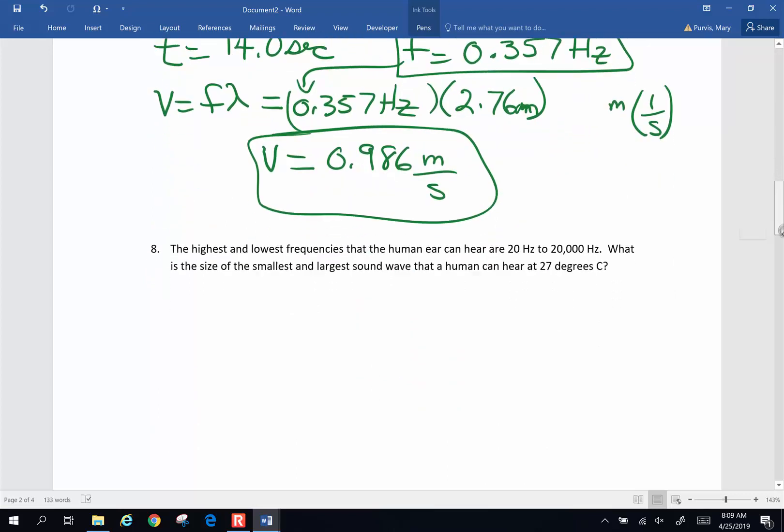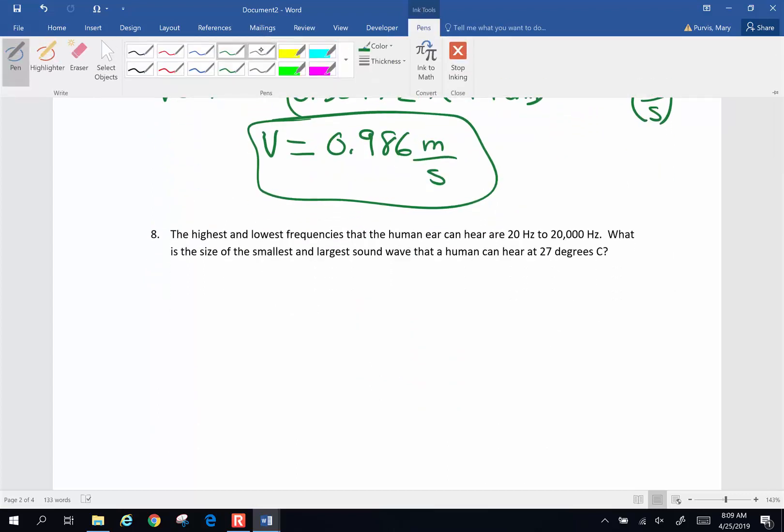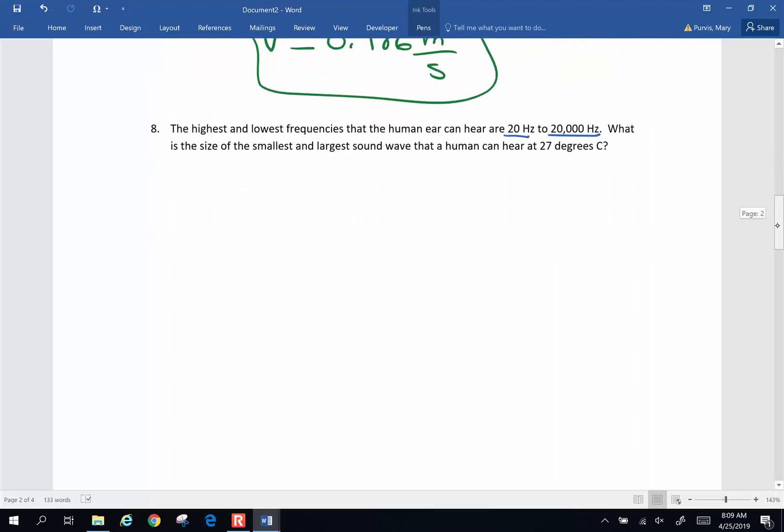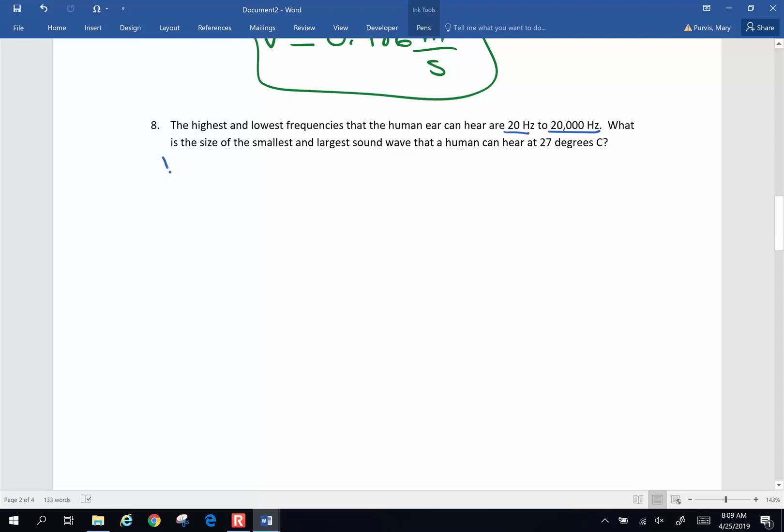Next and last for this group is number eight. And number eight says this. The highest and lowest frequencies that the human ear can hear are 20 to 20,000 hertz. What is the size of the smallest and largest sound wave that a human ear can hear at 27 degrees Celsius? So the first thing we have to do is we are going to have to find the velocity of sound at 27 degrees Celsius.